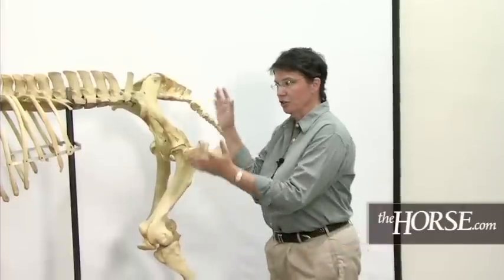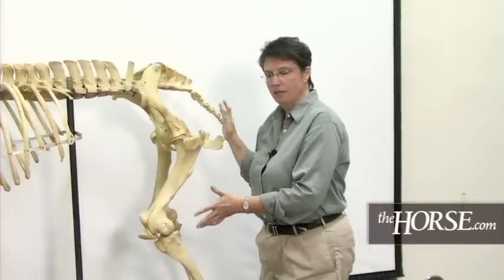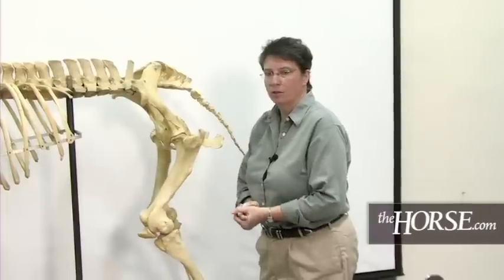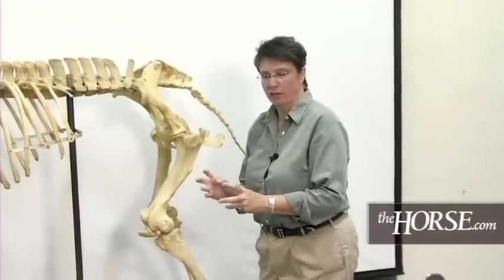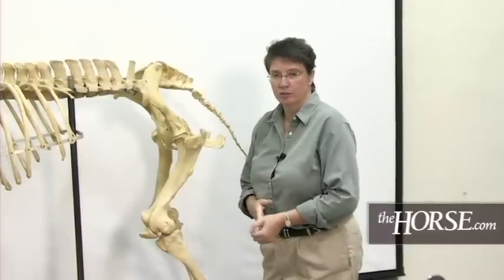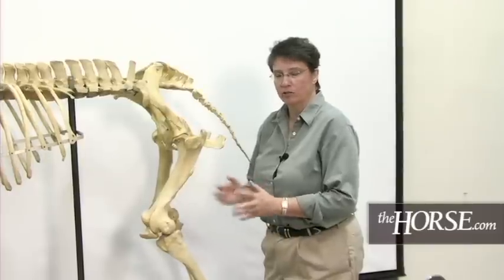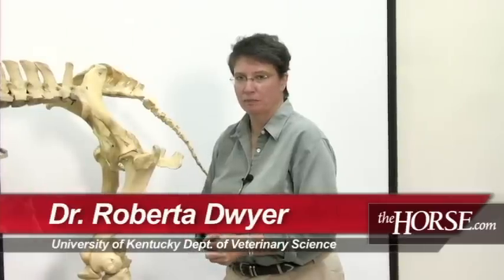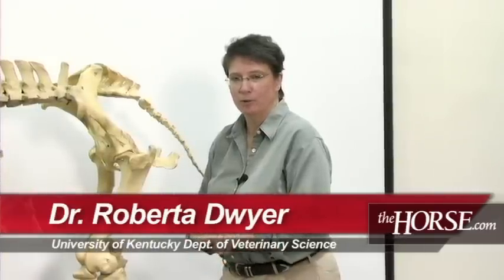So that's just a general overview of the skeleton of the horse, and we will get into more distinct pieces of the anatomy of the horse in a later segment. If you'd like more information, you can go to thehorse.com, talk to your veterinarian about different anatomical sites that you're interested in on the horse, and your public library is a very good source of information. Thank you for sharing this time with me today, and hope to see you in the next segment.